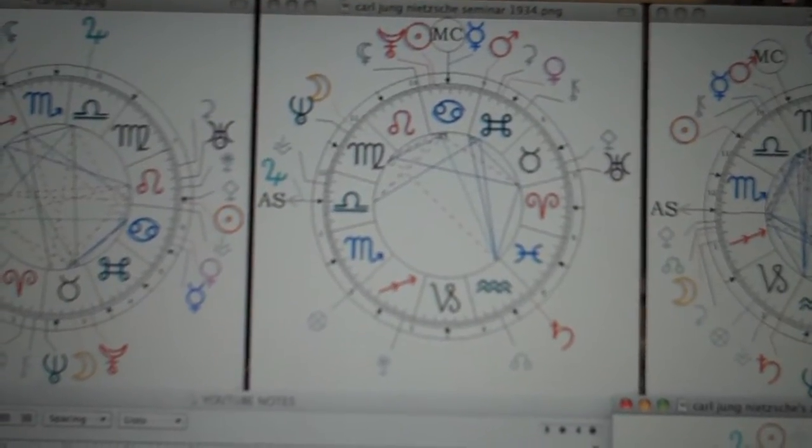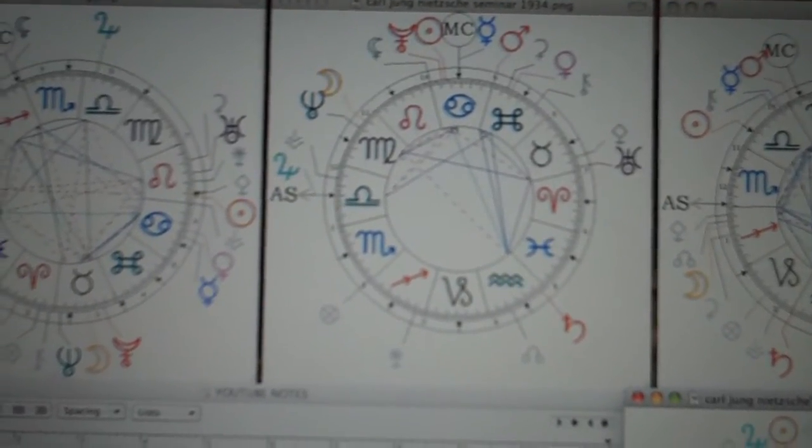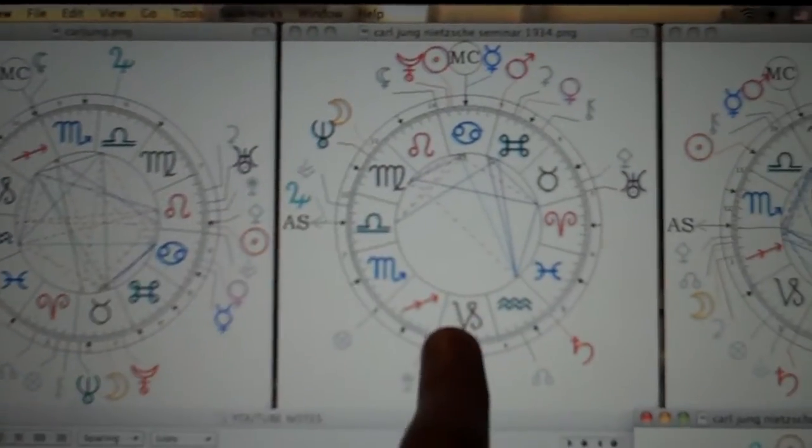It was about five years, 1934 through 1939. This is Jung's chart, and that's when he started.